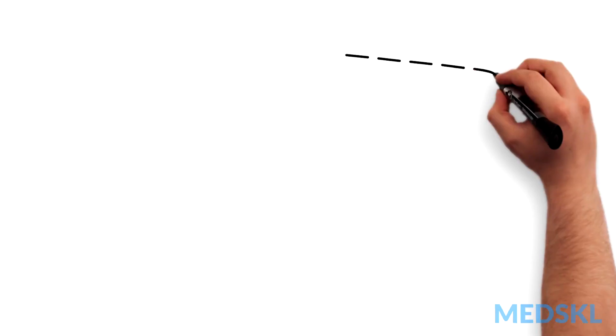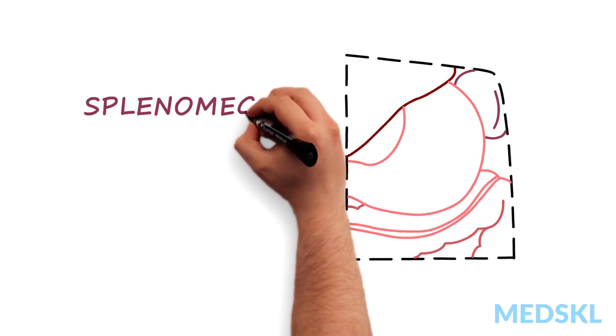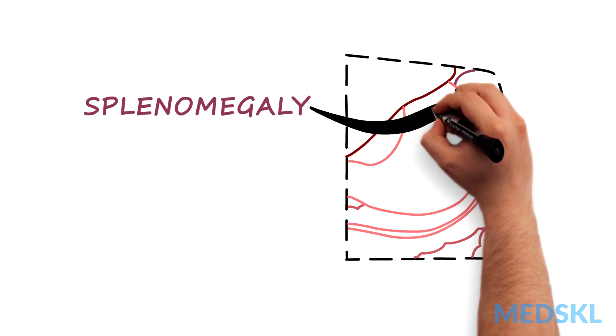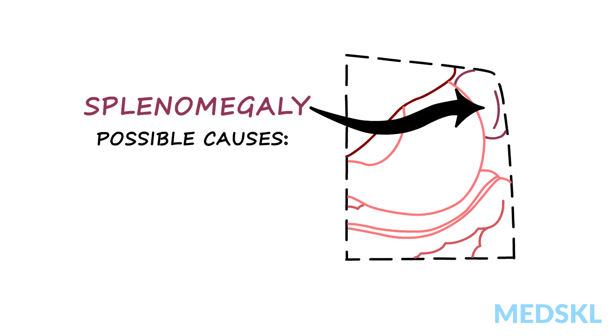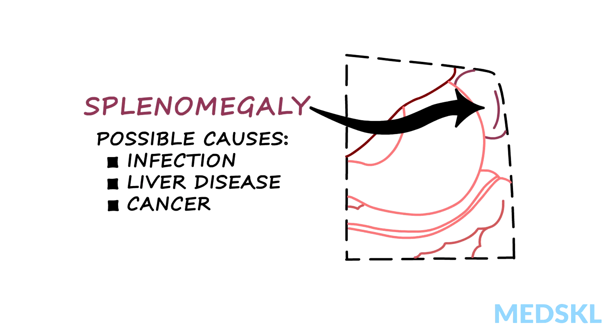A mass in the left upper quadrant should raise concern for splenomegaly. This can be due to infection, liver disease, or cancer.